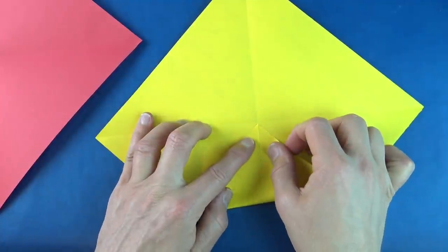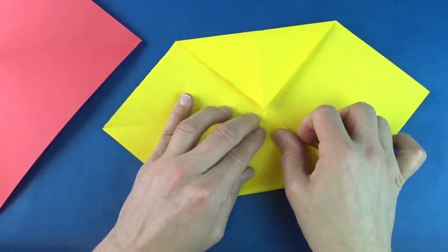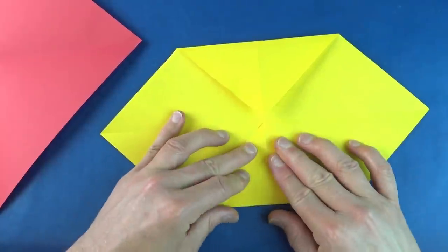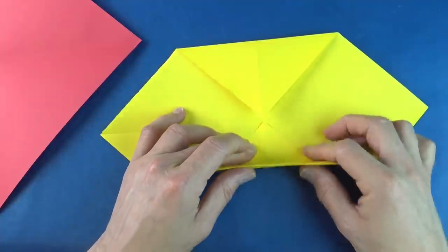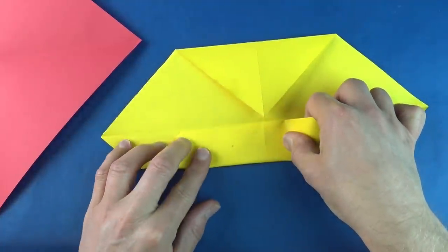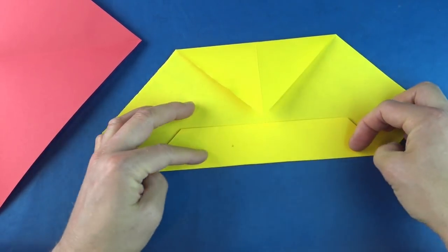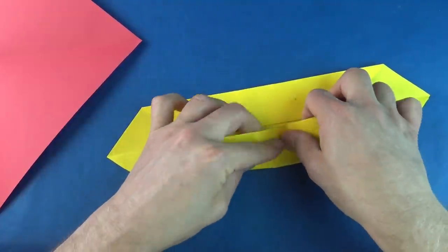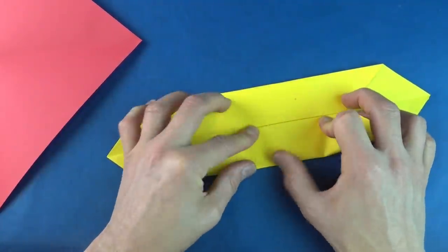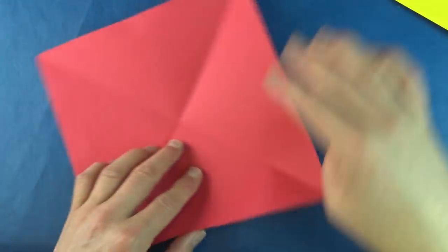And now fold two opposite corners to the middle. Rotate and repeat. And repeat with your other square.